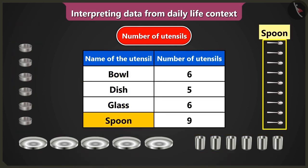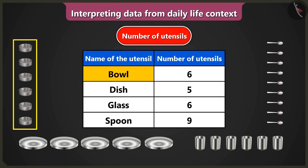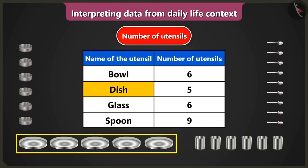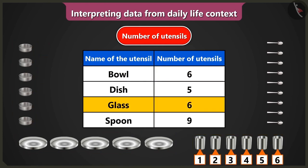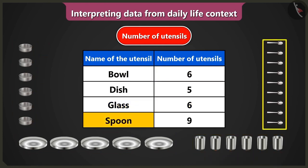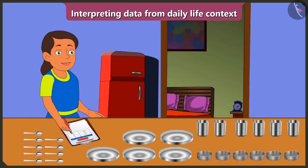Names of utensils — bowl, dish, glass and spoon — are written here. So the data about four kinds of utensils is given. The number of bowls is six, the number of dishes is five, the number of glasses is six, and the number of spoons is nine. I have interpreted the data about the number of utensils from this table.